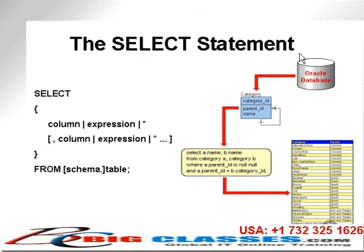How do we get data from the database? In Structured Query Language, we use a statement called the Select Statement. When data is retrieved from a relational database, what you effectively retrieve are sets of data. The original philosophy behind SQL was to retrieve chunks of data, groups of data, or sets of rows — not to retrieve a single row like you would in an object structure. However, SQL and relational databases have matured to the point where you can retrieve a single row or multiple rows.